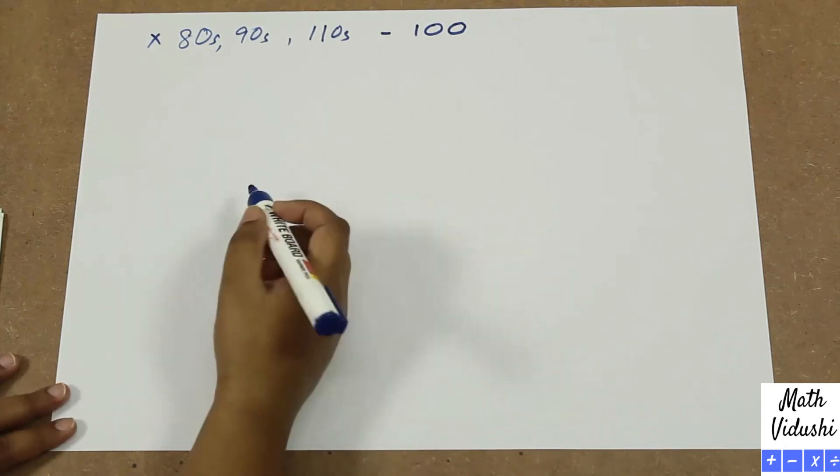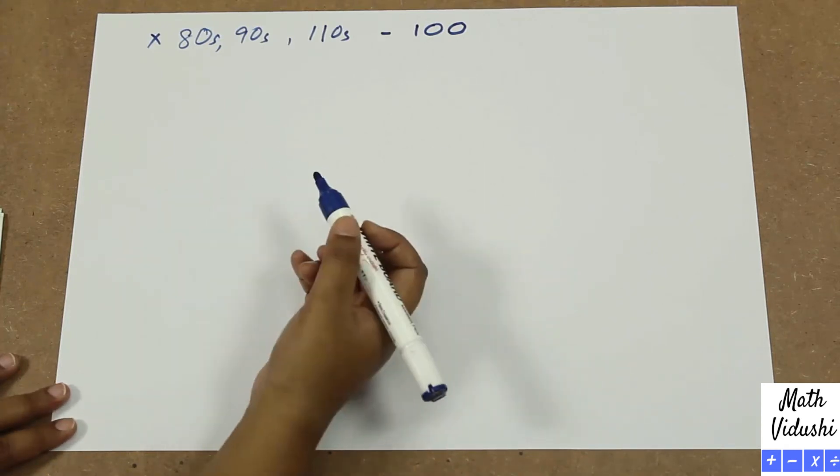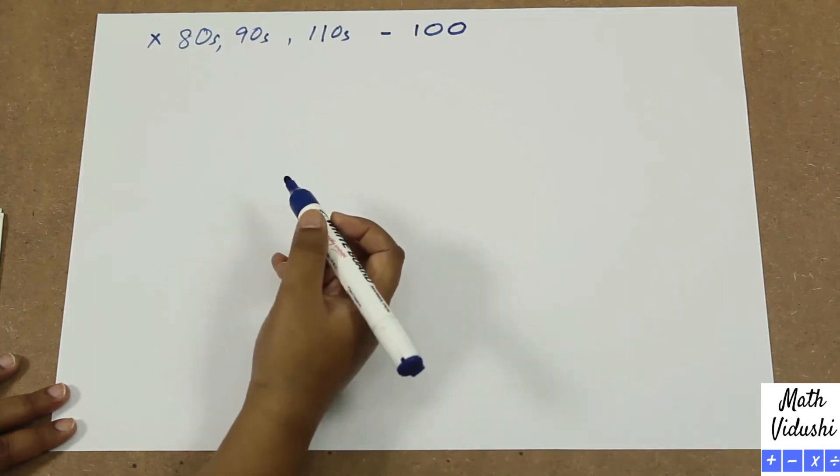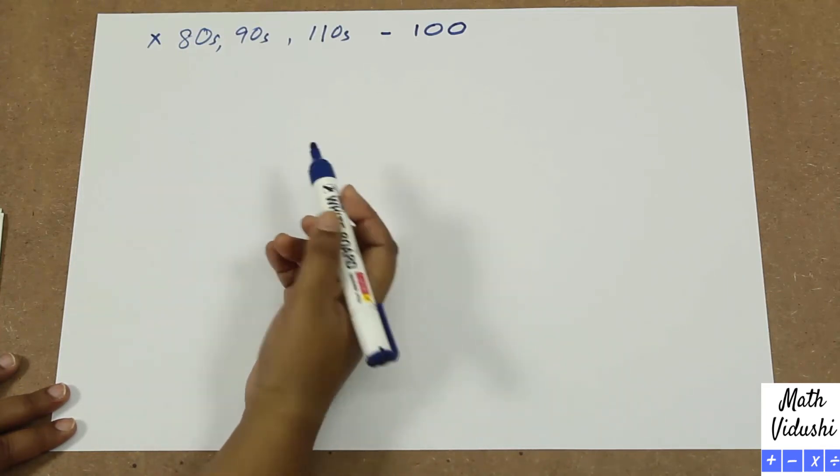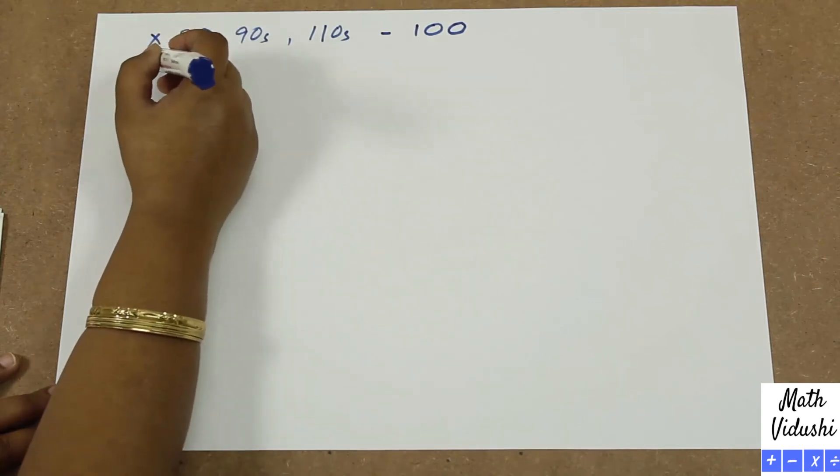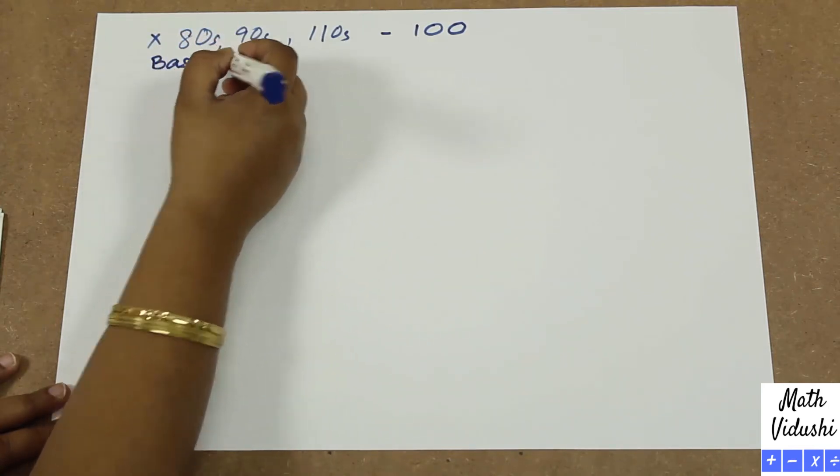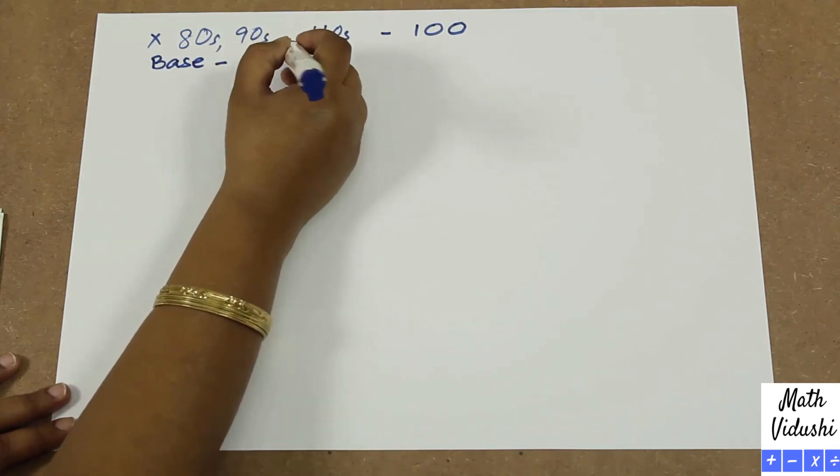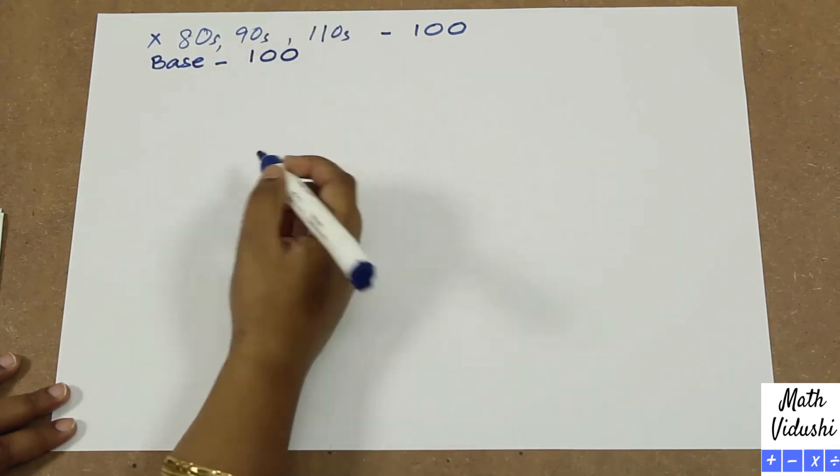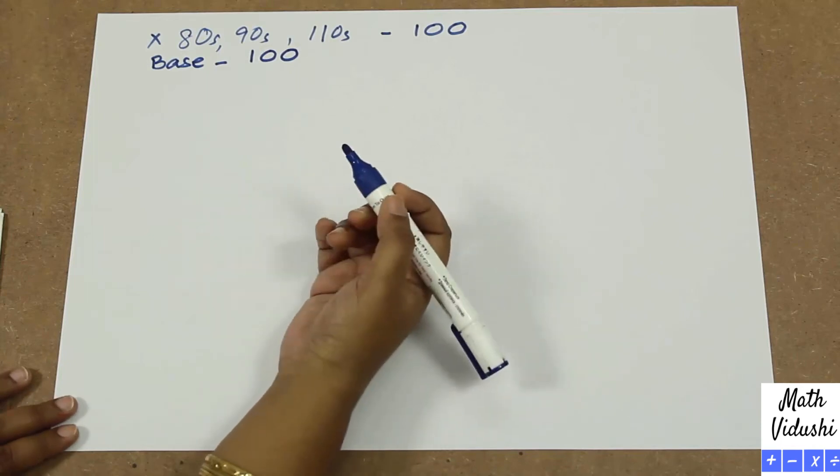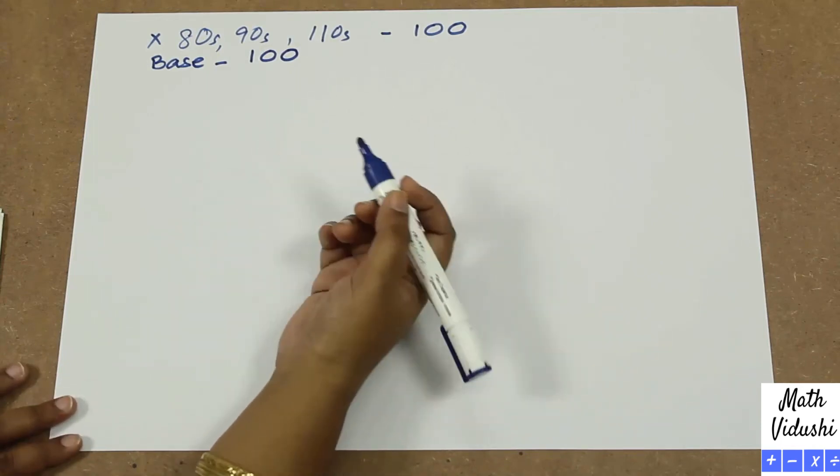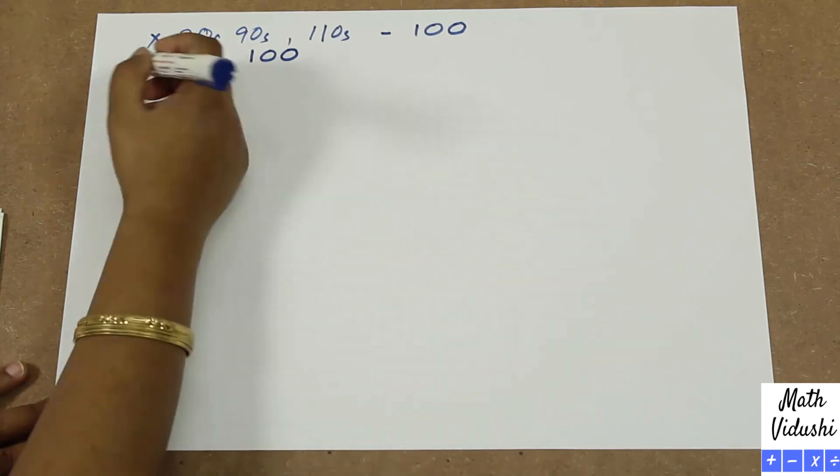So we use a method called Nikhilam, which is the complement of this particular number. First we will learn how to do with the base hundred, and then we will move on to how to do with other bases, and you can also do with other numbers.